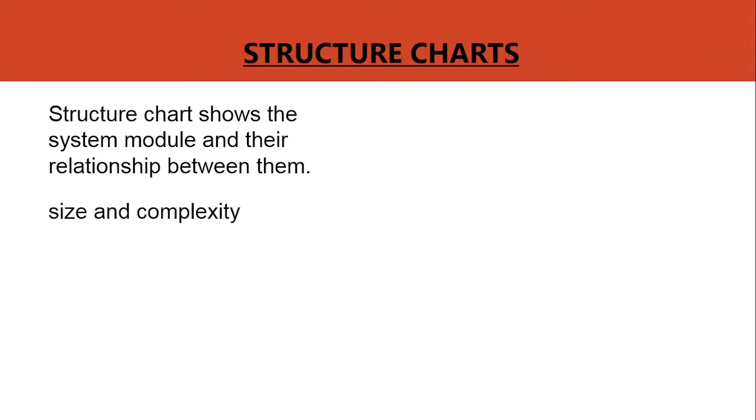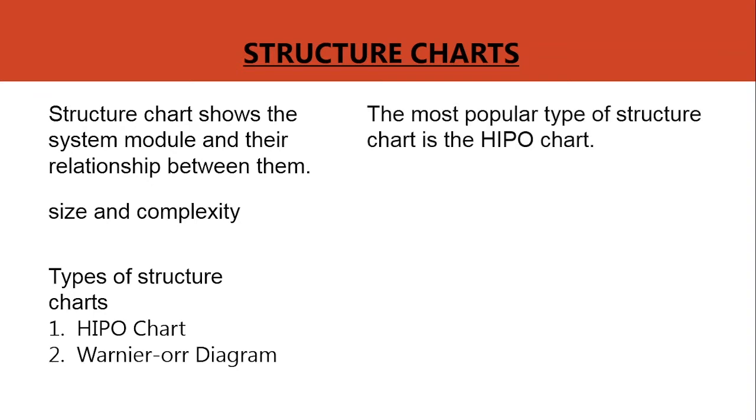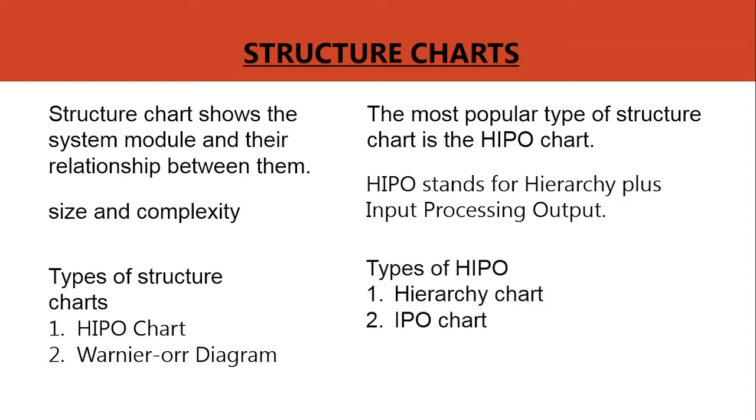This chart has two types of structure charts: the HIPO chart and the Warnier-Orr diagram. The most popular type of structure chart is the HIPO chart, which stands for hierarchy plus input processing output. And this HIPO chart has two types that make up a HIPO package. Number one, the hierarchy chart. Number two, the IPO chart or HIPO chart.